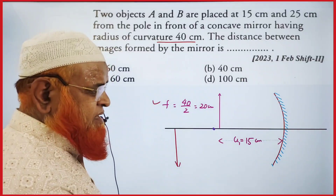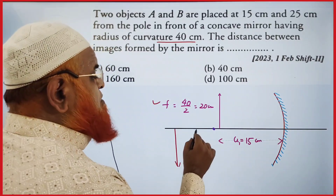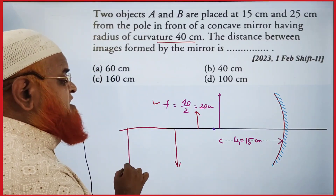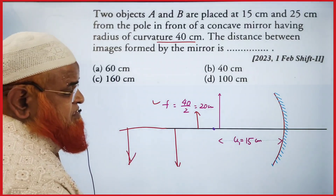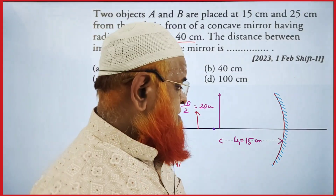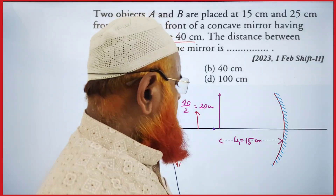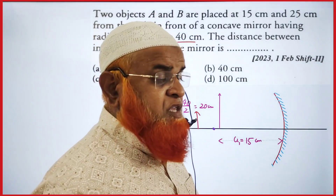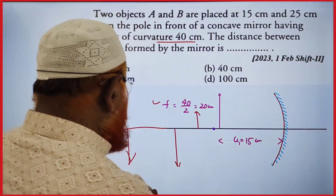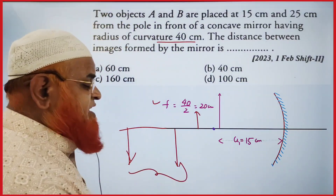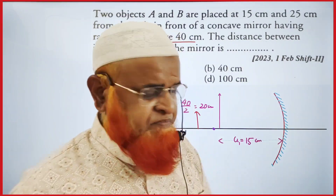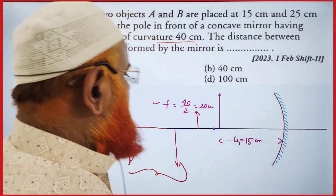If the object is placed at 15 centimeters, you may get the image somewhere here, and if the object is placed at 25 centimeters, you may get the image somewhere here. You have to find out the distance between the two images according to this problem.